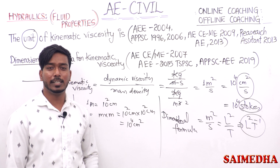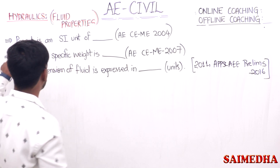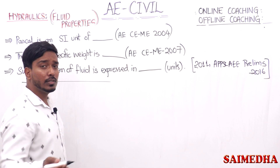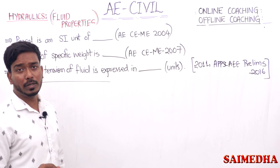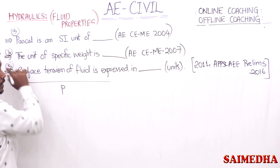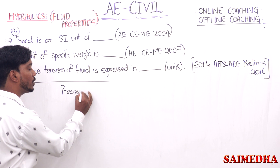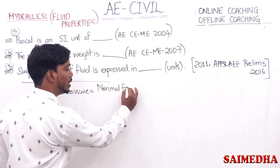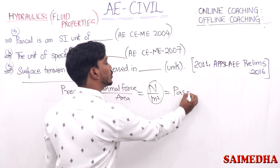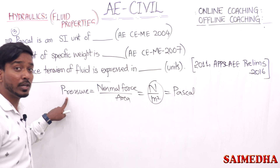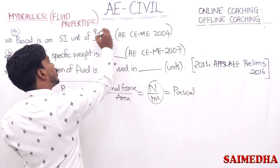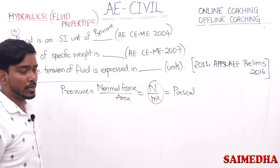Pause the video and note it down. Similarly, observe the next unit question: Pascal is the SI unit of what? Basically, Pascal can be written as Newton per meter square. Here in the fluid properties, Pascal is used for pressure. The formula for pressure: pressure is equal to normal force acting per unit area. In the year 2004 Assistant Engineer examination, civil and mechanical, the question asked: Pascal is the SI unit of — the answer is pressure.